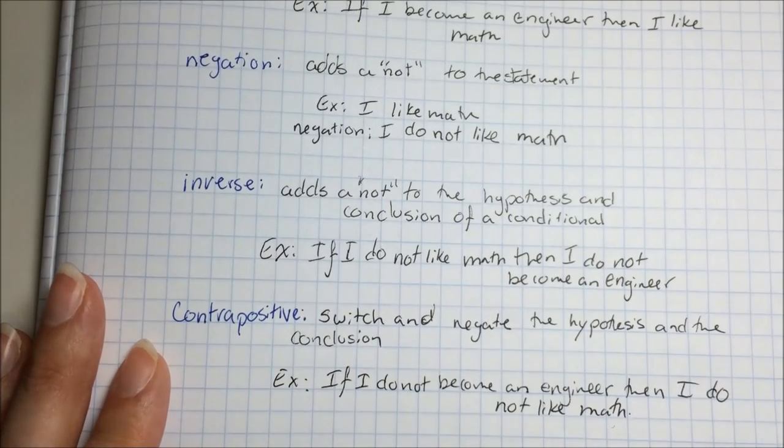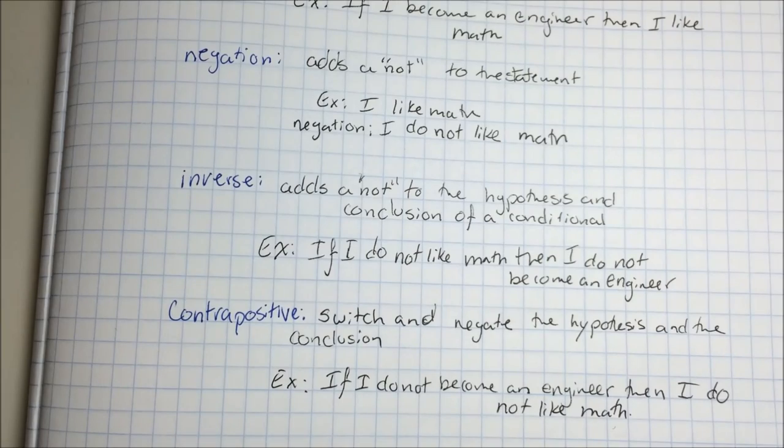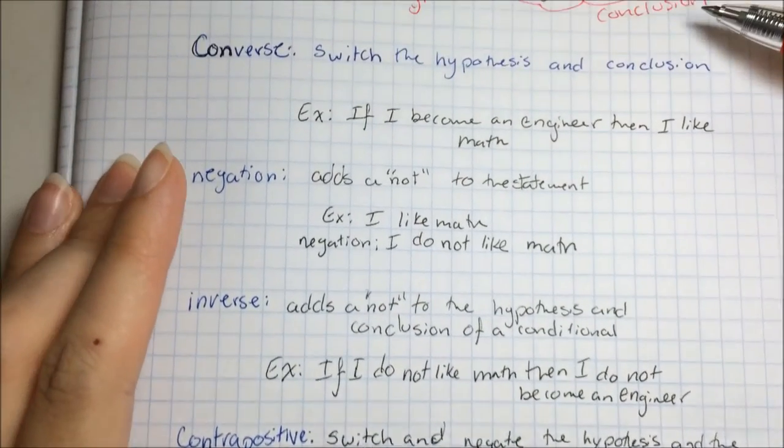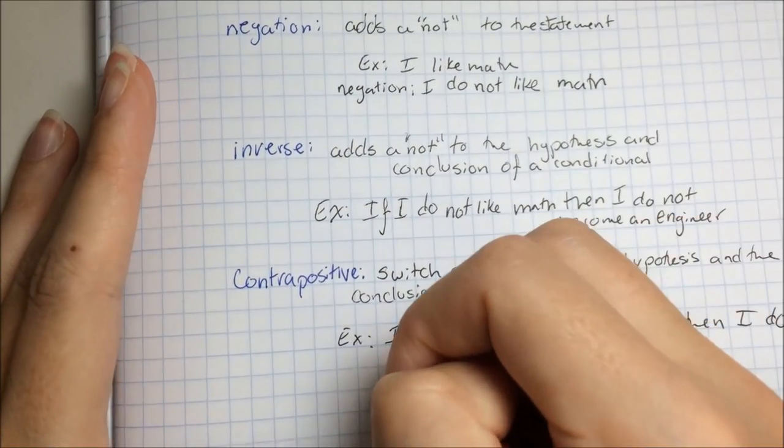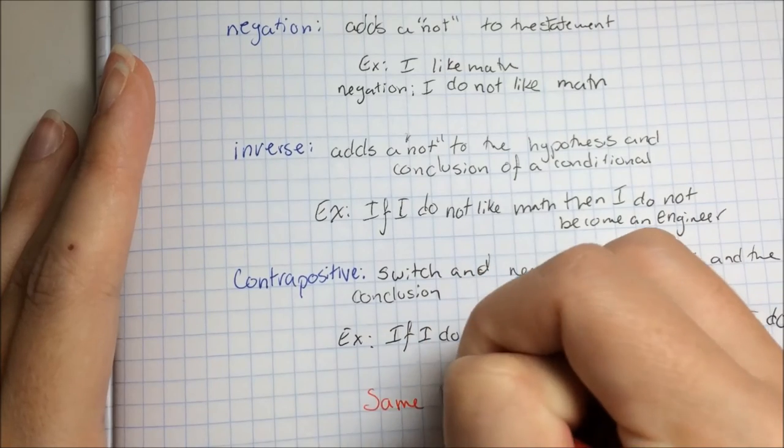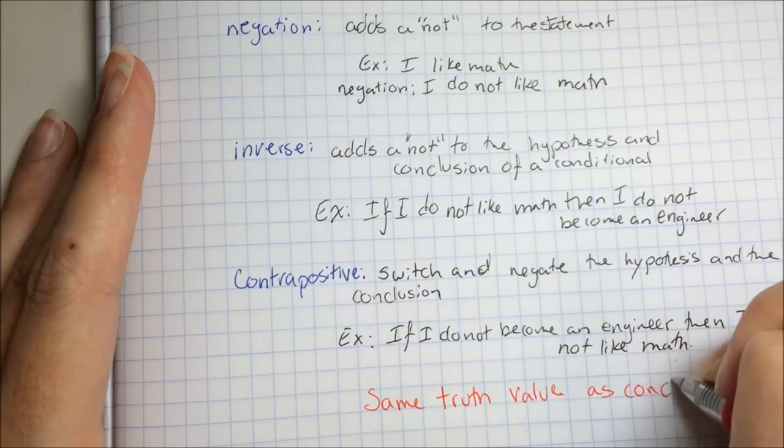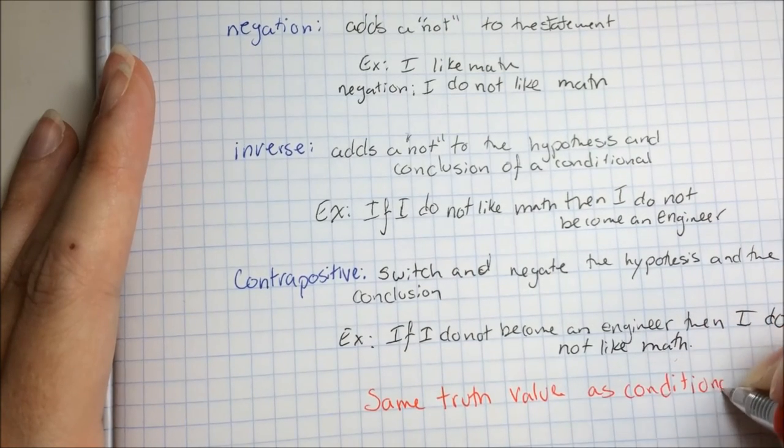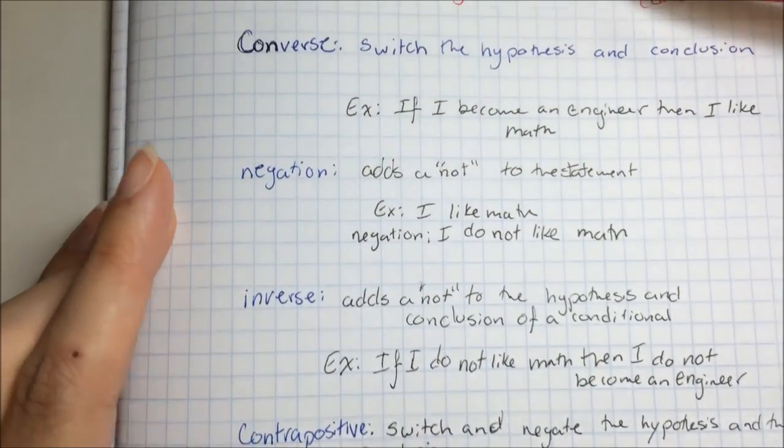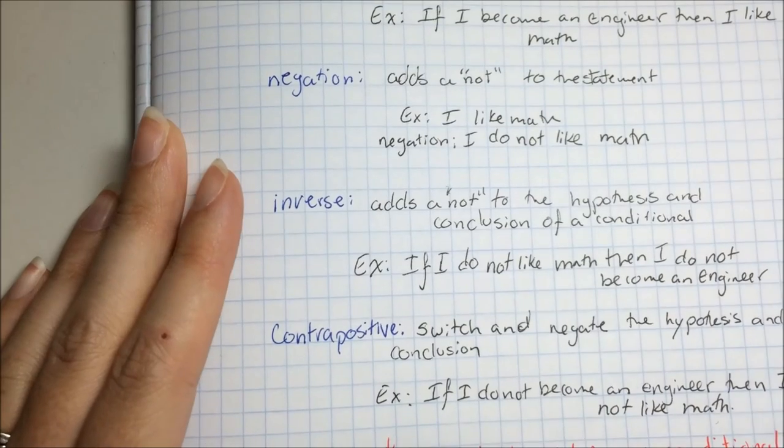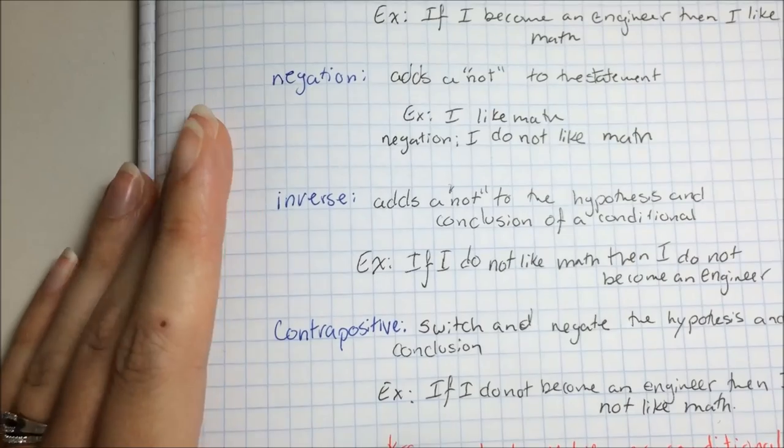Okay, so the cool thing about the contrapositive is it will always have the same truth value as the conditional statement. So if the conditional statement is true, the contrapositive will also be true. If the conditional statement was false, then the contrapositive would also be false. That doesn't work with the converse or the inverse, it only works with the contrapositive.